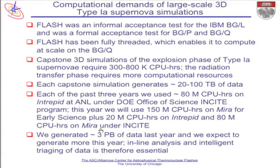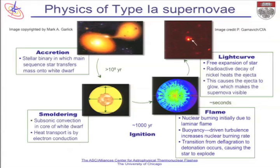Currently this year we will use 150 million CPU hours on Mira, equivalent to 300 million on Intrepid, and another 20 million for the supernova simulations through the Insight program. Last year we generated three petabytes of data and we're generating a lot more now, so we have to do intelligent triaging and data compression to be able to handle this data.